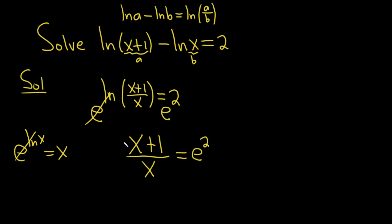To solve for x now, we simply have to clear the fraction. So I'll put an x here and put one here. So these cancel, so we have x plus 1 equals e squared times x.